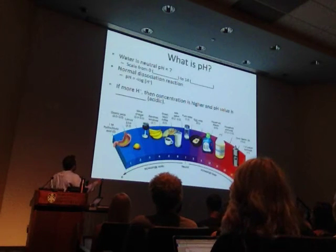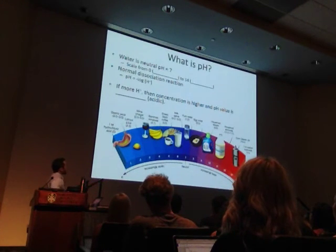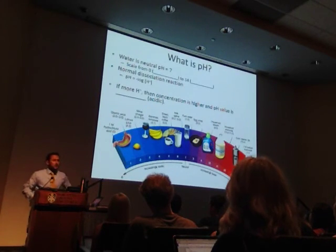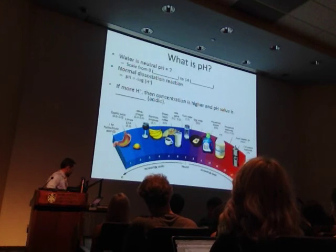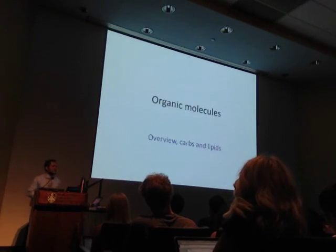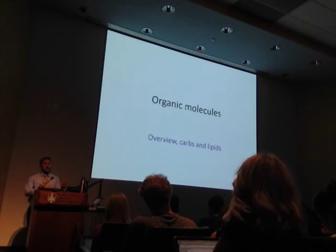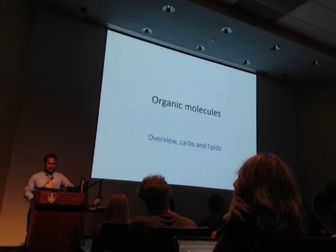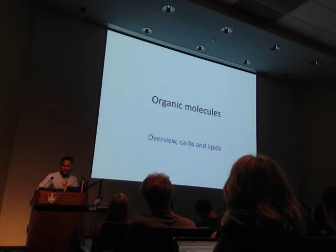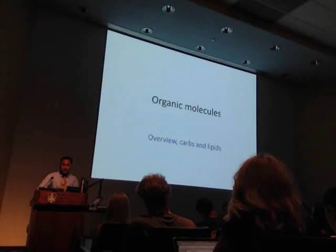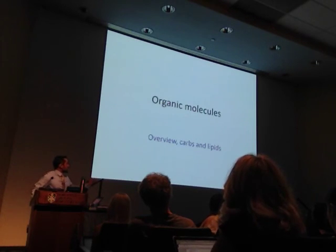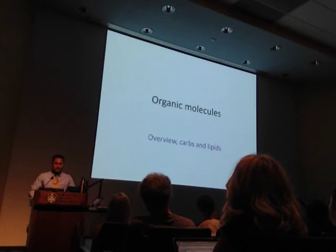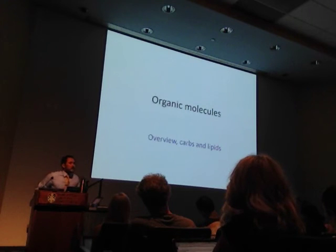So the more hydrogen ion concentration there is, the pH value is lower — it's more acidic. We're talking an awful lot about inorganics, and now we'll enter into this segment of organic substances — things you should be very familiar with: carbohydrates, lipids, proteins, and nucleic acids.